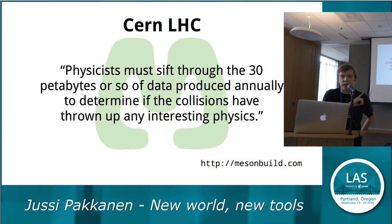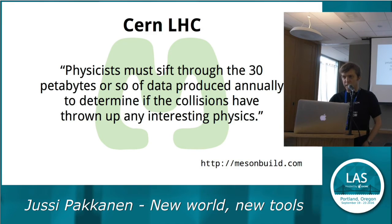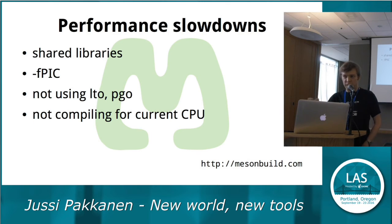There are even more advantages when you do things from source. When you do things at scale, interesting things start slowing you down. For example, CERN's Large Hadron Collider has to sift through 30 petabytes of data used annually to determine if there's any interesting physics. Using shared libraries is a performance problem because there's an indirection that slows you down at really massive scale. Using fPIC produces slower code, and it's a requirement when using shared libraries.